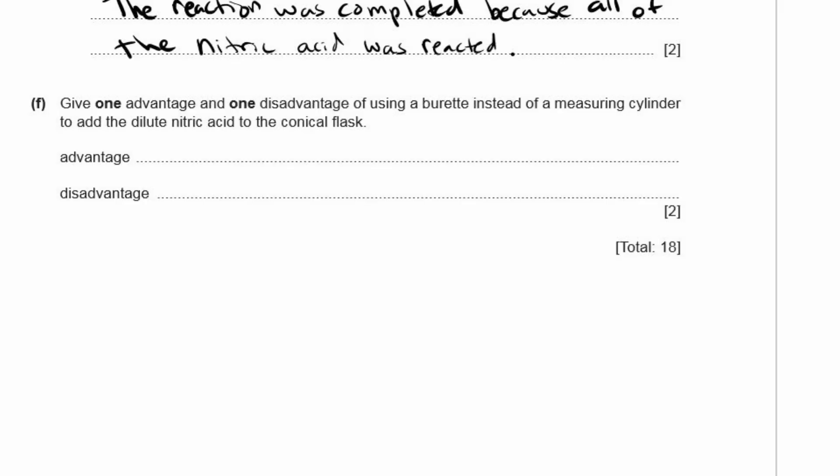F, give one advantage and one disadvantage of using a burette instead of a measuring cylinder to add the dilute nitric acid to the conical flask. So the advantage is clearly that it's much more accurate. Burettes are a very accurate way of measuring liquids. So it's much more accurate. And the disadvantage is it's slower. It takes longer for the liquid to drain out of the pipette. Keep in mind when you're talking about a burette, there are different sizes of burettes. You can have burettes that go to five milliliters, or you can have burettes that go to 50 milliliters or a hundred milliliters. So there's a lot of variation in burettes. So it's not that you will necessarily have to refill it more than once.